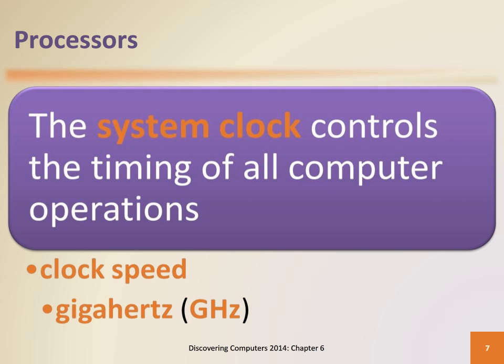The processor relies on a small quartz crystal circuit called the system clock to control the timing of all computer operations. The pace of the system clock is called the clock speed and is measured in gigahertz.